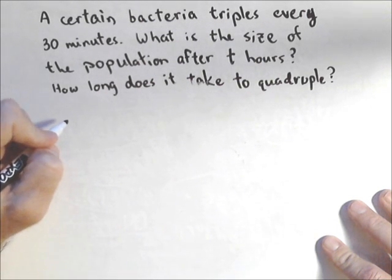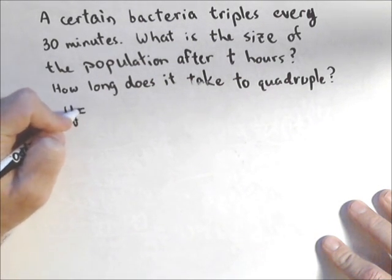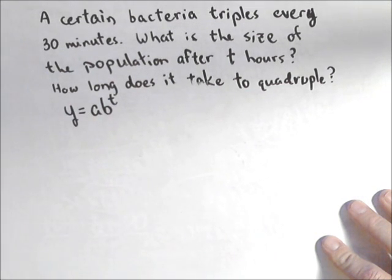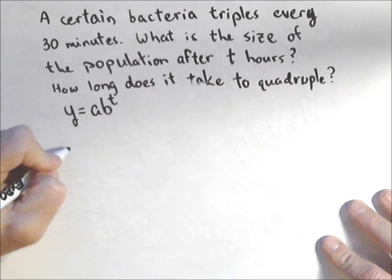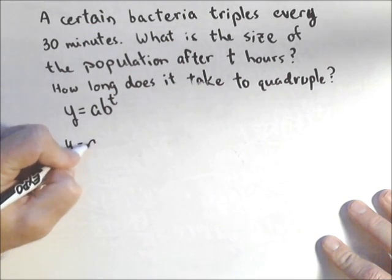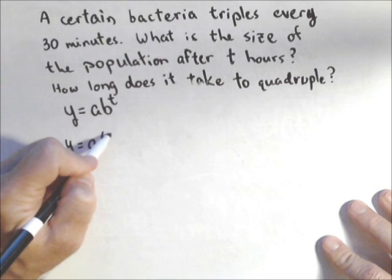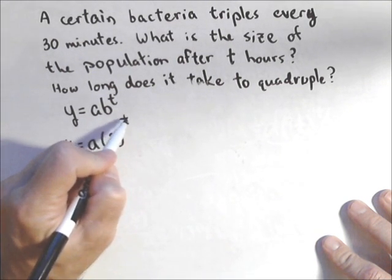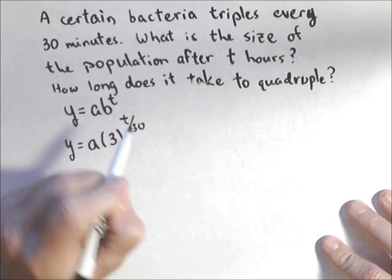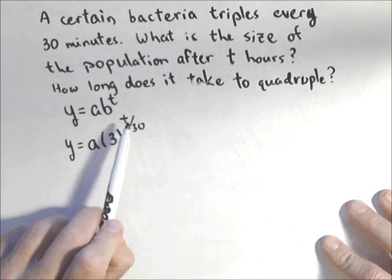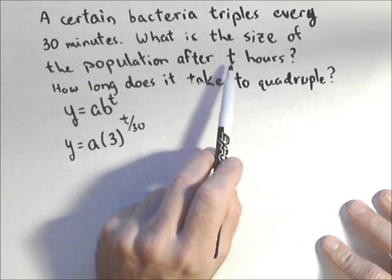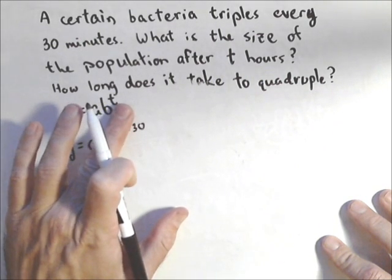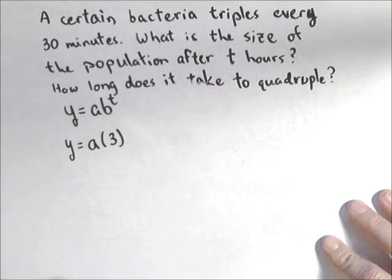First off, let's talk about building our model. I'm gonna use the form y equals ab to the t, because it makes doubling, tripling, quadrupling, and half-life very easy to deal with. I know a is my initial amount, and it's gonna triple after 30 minutes. So typically we put t over 30. The problem is that t would then be in minutes, but we were asked to do it in hours. So I'm gonna need to change this just a little bit.